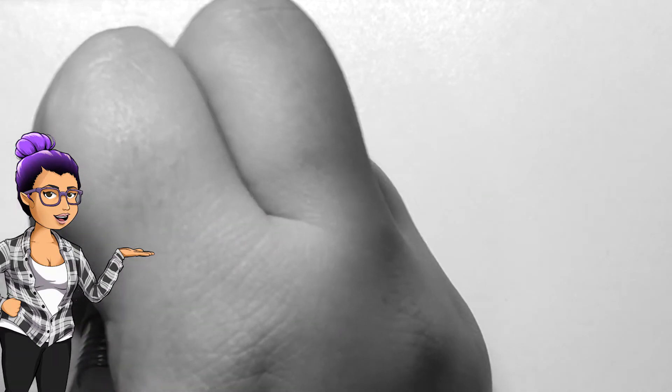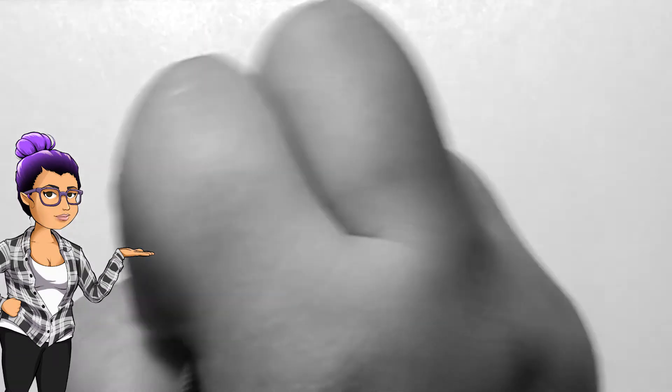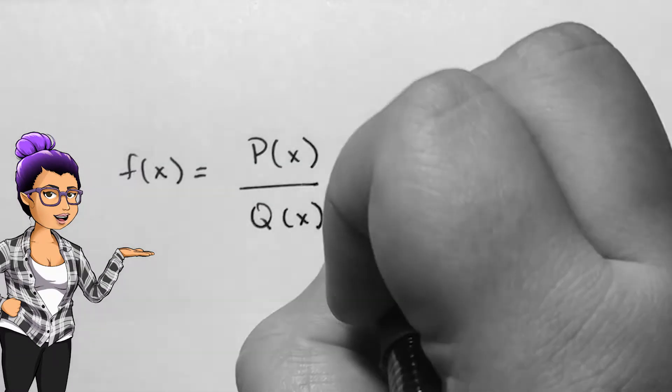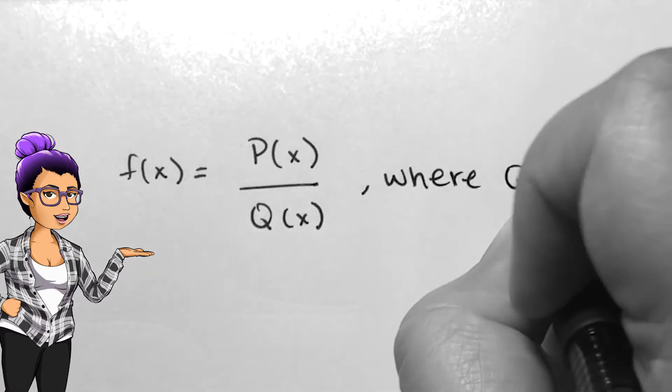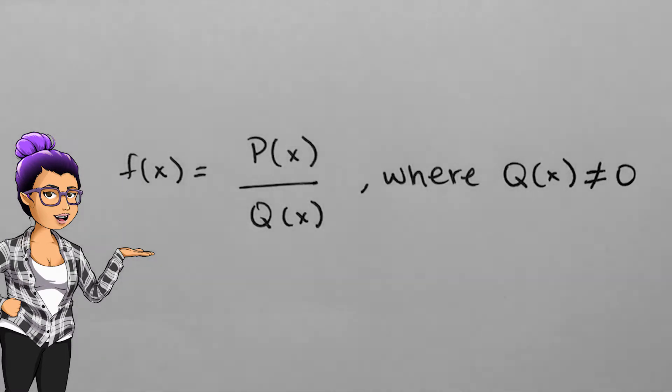A rational function looks like this: f(x) = P(x)/Q(x), where both P and Q are polynomials. Note that Q of x cannot be 0, since we aren't allowed to divide by 0.